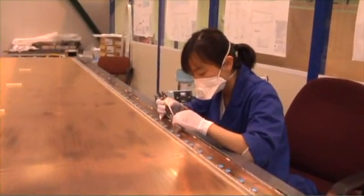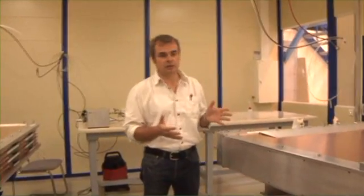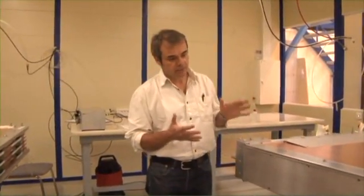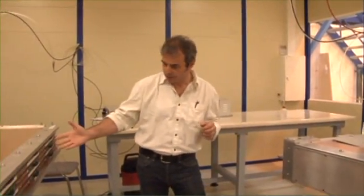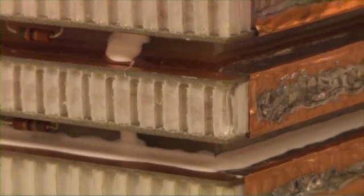In this laboratory we perform the final assembly of one cathode strip chamber. Basically we put together seven panels, as you see here, seven panels. They are stacked together, tied together, they are sealed.